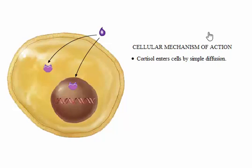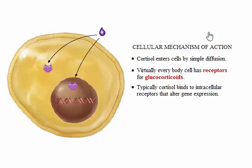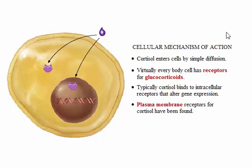Cortisol enters cells by diffusion. Nearly every cell in the body has receptors for the glucocorticoids. Cortisol binds to receptors in the cytosol and the nucleus that alter gene expression. In addition to intracellular receptors, there are plasma membrane receptors for cortisol. Rapid inhibition of CRH by the feedback loop is mediated through these plasma membrane receptors.